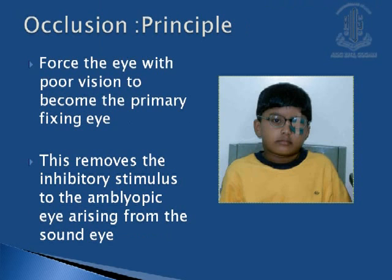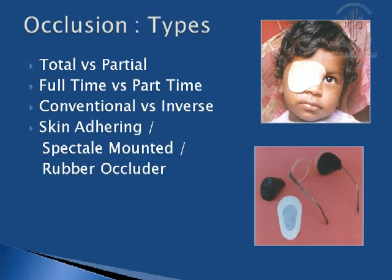Occlusion is the mainstay of therapy in amblyopic patients. It works on the principle of forcing the eye with poor vision to become the primary fixing eye, thereby removing the inhibitory stimulus to the amblyopic eye arising from the sound eye. There are different types of occlusion: total or partial, full time or part time, conventional versus inverse or skin-adhering, and spectacle mounted or rubber occluder.